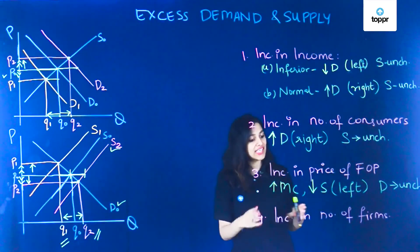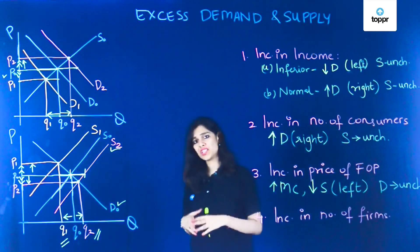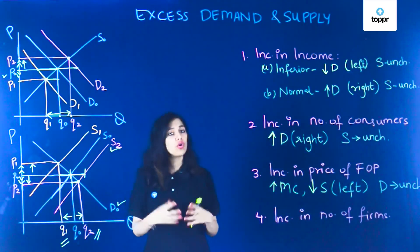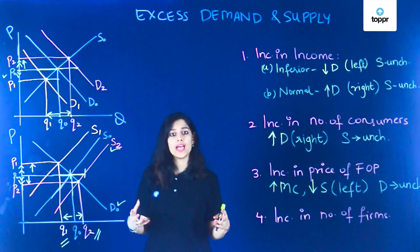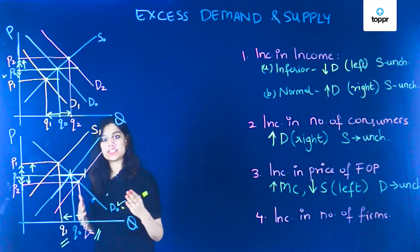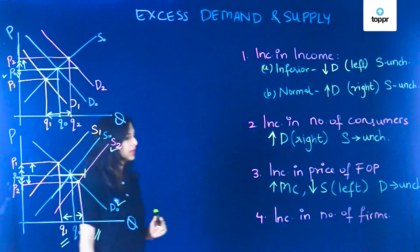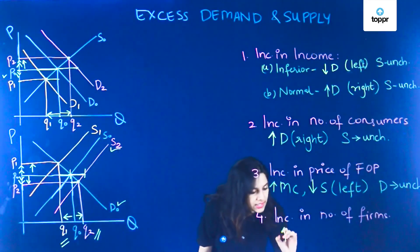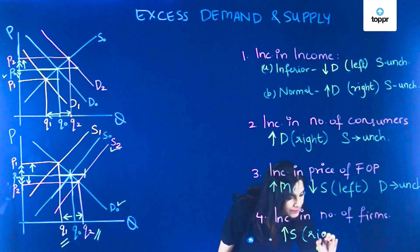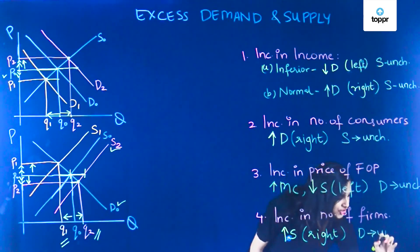Finally, let's talk about an increase in the number of firms. When the number of firms increases, there are more firms that supply the product and hence supply increases from S0 to S2 — an increase in supply to the right — but the demand remains unchanged.